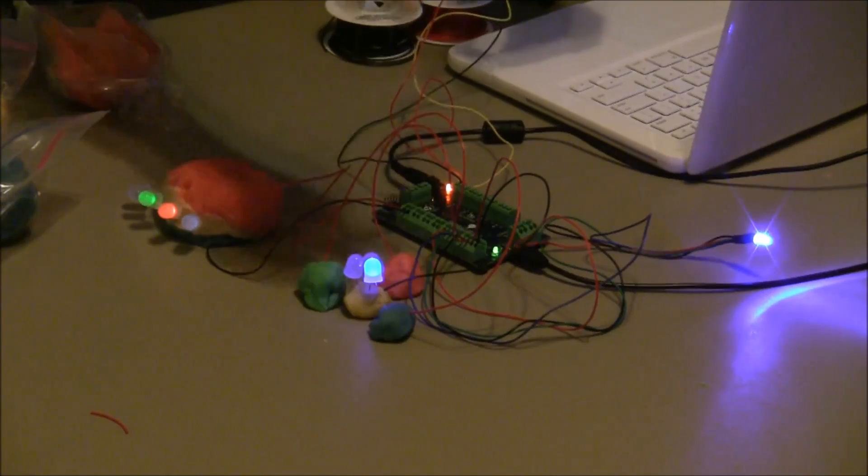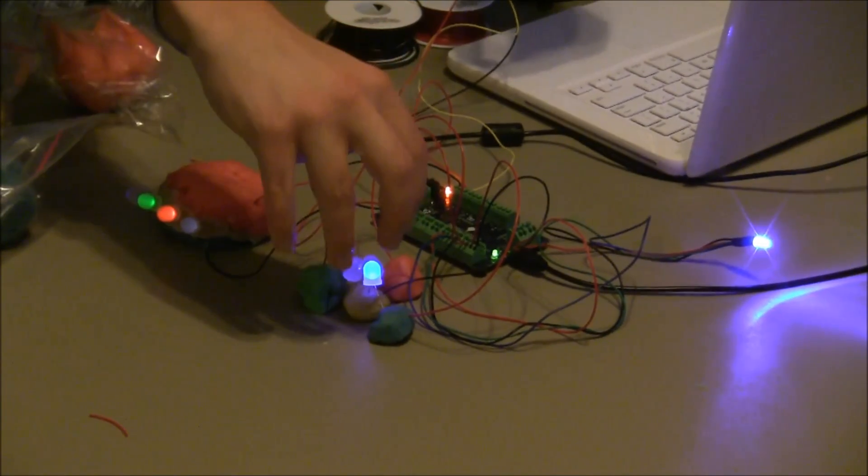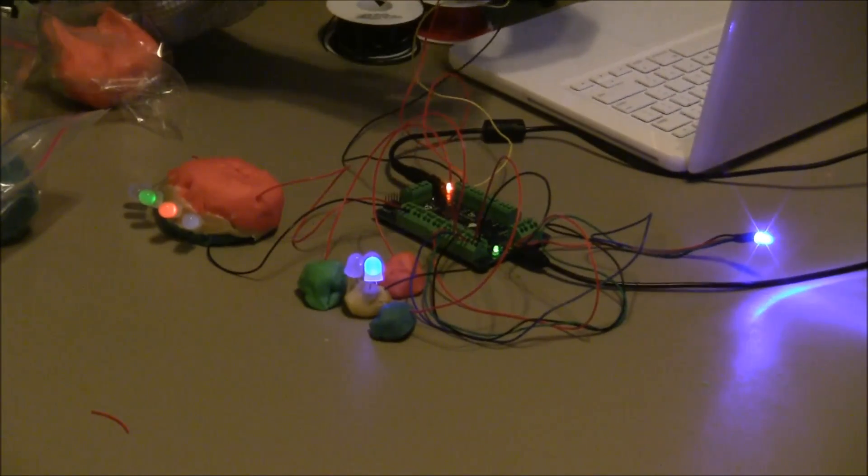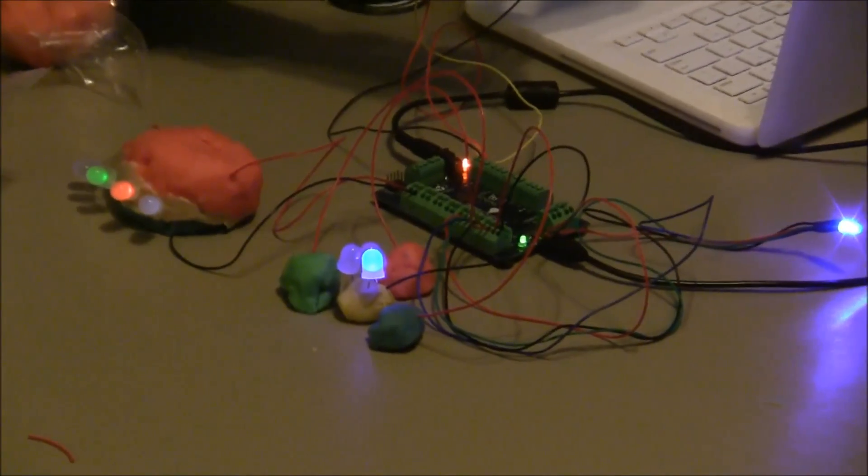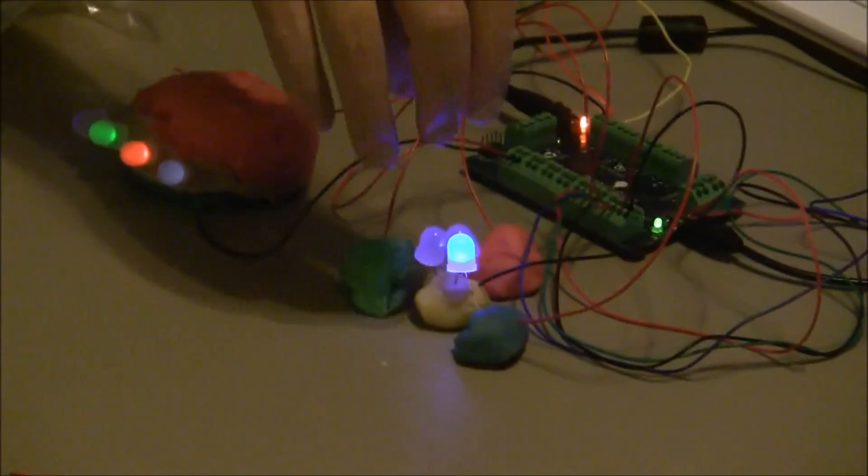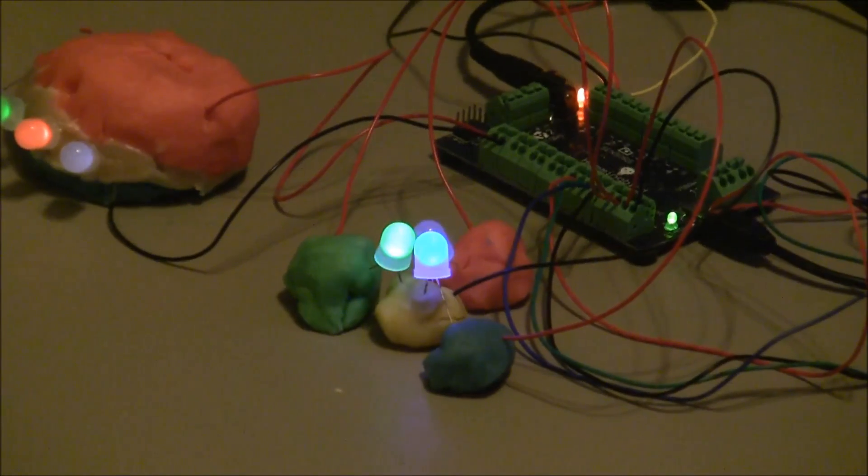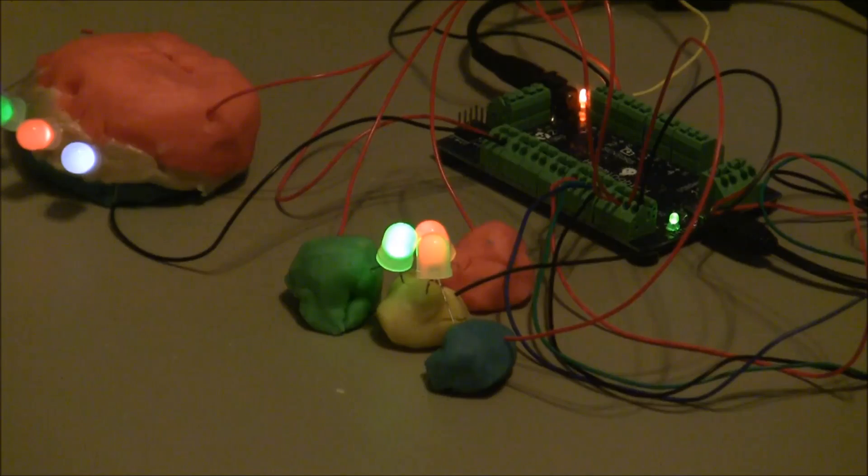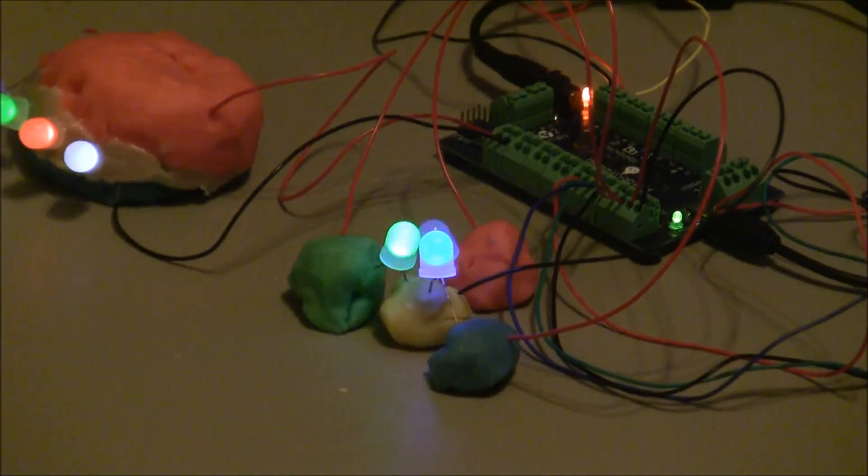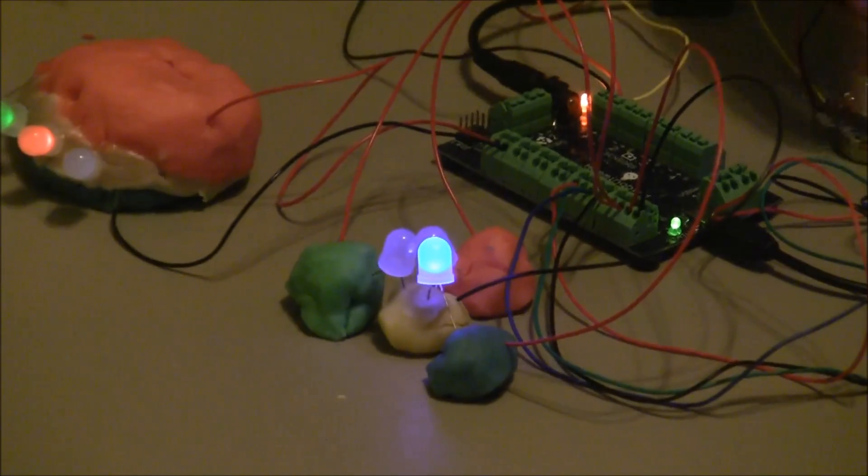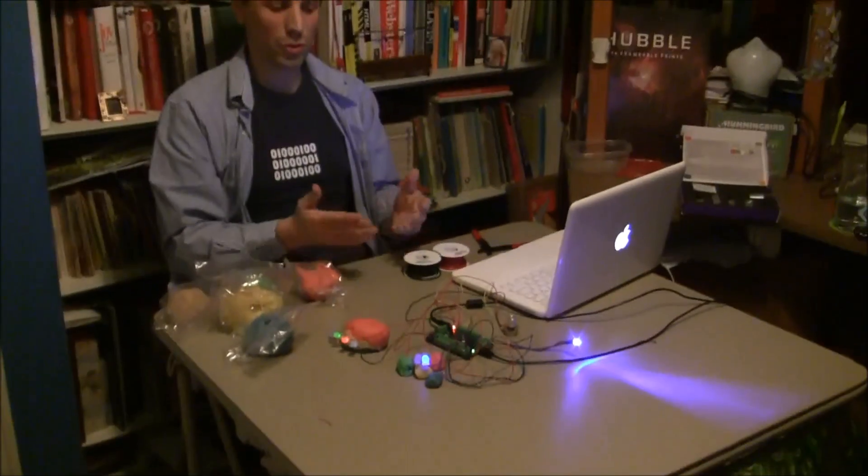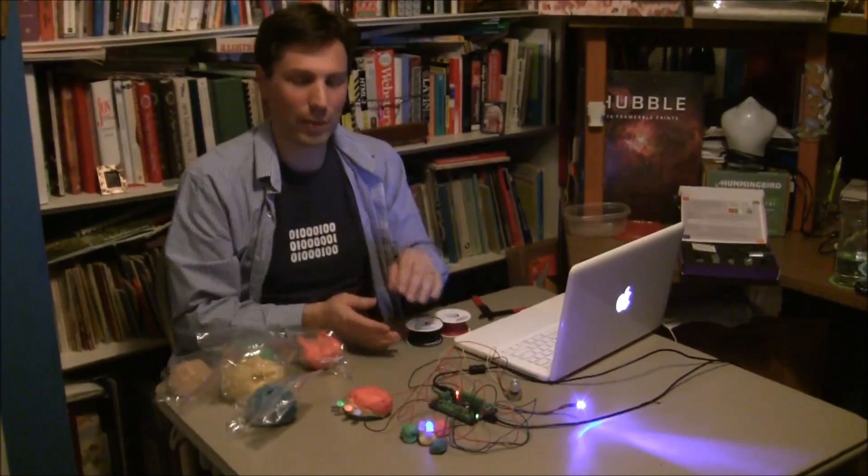And if you put this through a nice translucent material, it would mix the colors very nicely. So that's how you hook up LEDs to the Hummingbird with conductive Play-Doh. You can just use the regular LED ports on the Hummingbird.